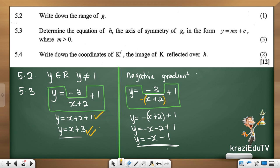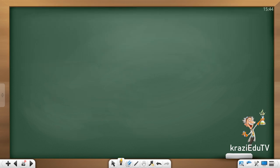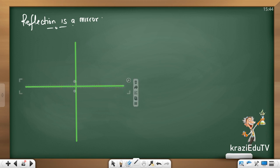Now, let's look at the last one, 5.4. Write down the coordinate of k prime, the image of k reflected over h. I'm going to do this in two ways. And this would help us understand what the whole thing is all about. Let me try to explain what this is all about. First, reflection is a mirror. I'm going to do it in two different ways. Reflection is a mirror. Let's start. If I were to draw that, and we're talking about k, which is 1 and 0. That's my k.